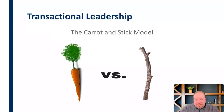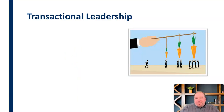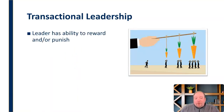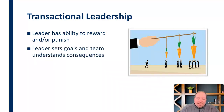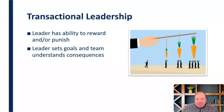Another type is transactional leadership — what we call the carrot and the stick model: rewards versus punishment. The transactional leader has the ability to reward and punish. The leader sets goals and the team understands the consequences — if they achieve those goals, it'll go well; if they don't, there may be negative consequences. So the leader sets those goals and helps the team understand what the positive or negative consequences are.